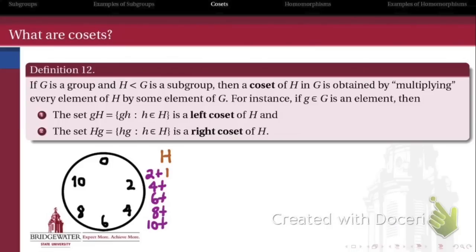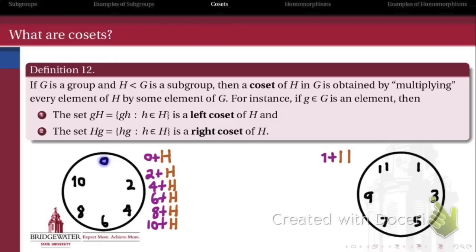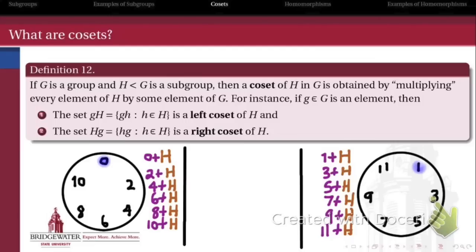In fact, if we take another look at this, 2 plus H, 4 plus H, 6 plus H, 8 plus H, and 10 plus H, those are all the same thing as one another. Likewise, 1, 3, 5, 7, 9, and 11, if I add those to H, I end up getting the same subgroup every time.